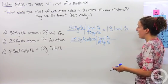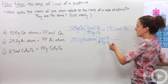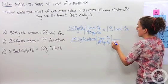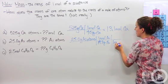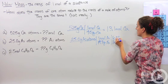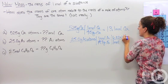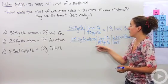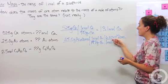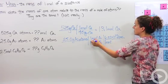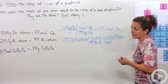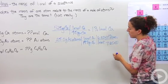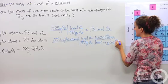We can cross the grams unit out. 25 divided by 197 gives us moles, but we want to get to atoms, so we're not quite done. For every one mole, we have 6.02 times 10 to the 23rd atoms. So we do 25 divided by 197, times 6.02 times 10 to the 23rd atoms. The moles unit crosses out, giving us 7.65 times 10 to the 22nd atoms of gold.